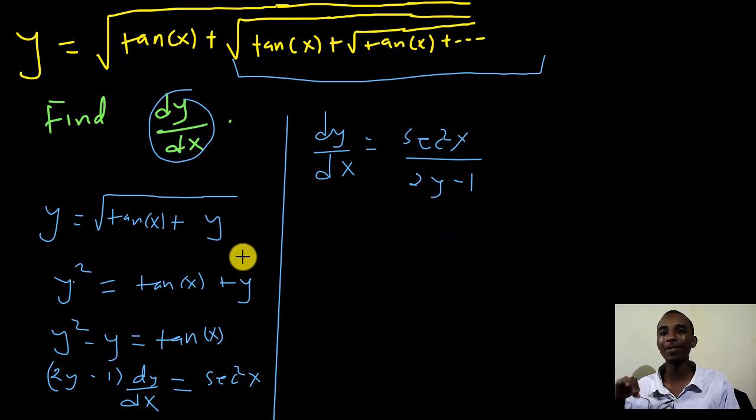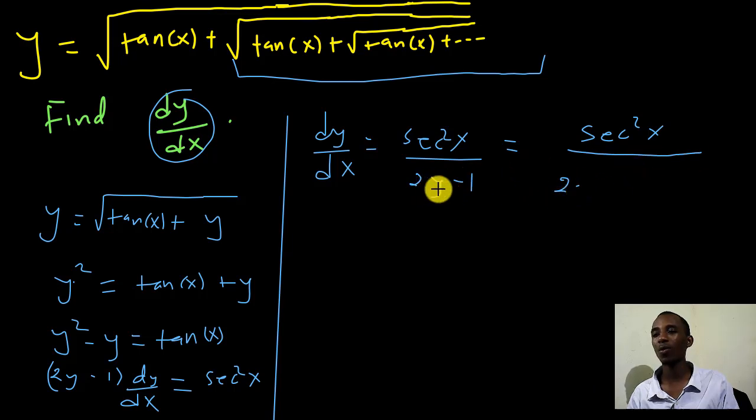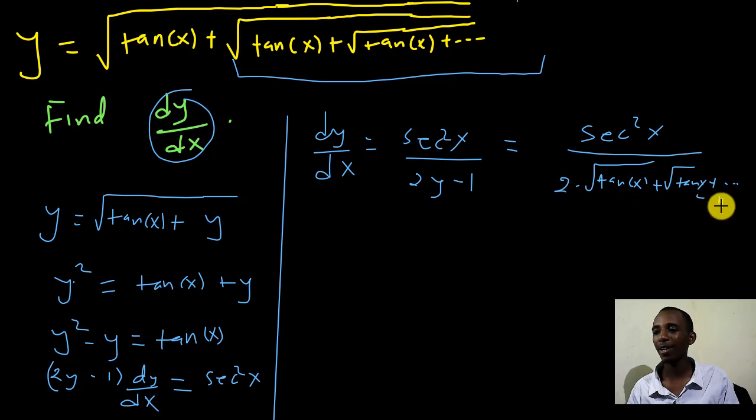So dy dx or dy over dx is going to be sec squared x divided by 2y minus 1. But remember, this is a derivative of y with respect to x. So it's not pleasant to have the y within the final derivative. So let's replace back the y. This is going to be sec squared x divided by 2 times y, which is the original function: the square root of tan x plus the square root of tan x plus and so on, and then minus 1.